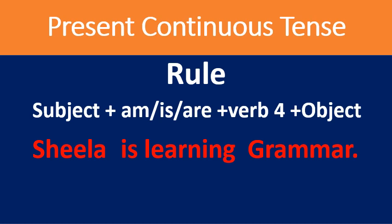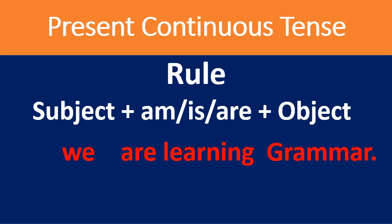Then we add the fourth form of the verb plus the object. For example: 'Sheila is learning grammar.' 'We are learning English grammar.' One more example: 'We are learning grammar.' Here 'we' is plural, that is why 'are' is used. In the previous example, 'Sheila' was singular, that is why 'is' was used.